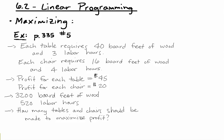The profit for each table is $45, and the profit for each chair is $20. In a certain week, the company has 3200 board feet of wood available and 520 labor hours. How many tables and chairs should Winston manufacture in order to maximize its profits? And I've got the summary listed. We know that each table requires 40 board feet of wood and 3 labor hours, and each chair requires 16 board feet of wood and 4 labor hours.